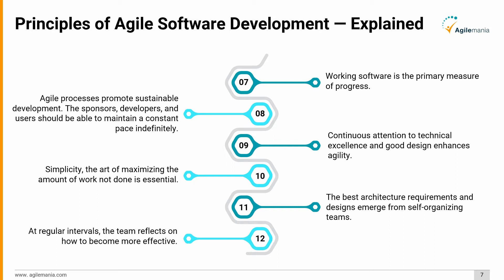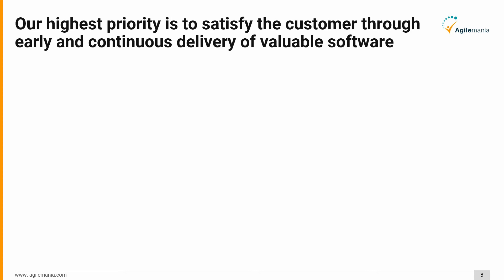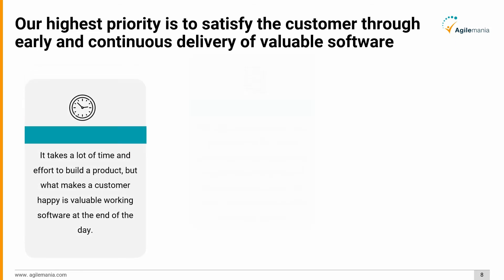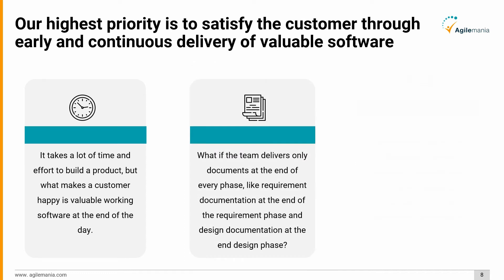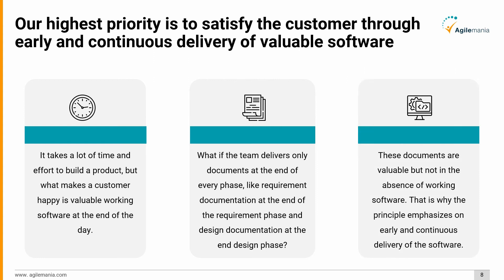The first principle in detail: our highest priority is to satisfy the customer through early and continuous delivery of valuable software. It takes a lot of time and effort to build a product, but what makes a customer happy is valuable, working software. What if the team delivers only documents at the end of every phase? These documents are valuable, but not in the absence of working software. That is why this principle emphasizes early and continuous delivery.